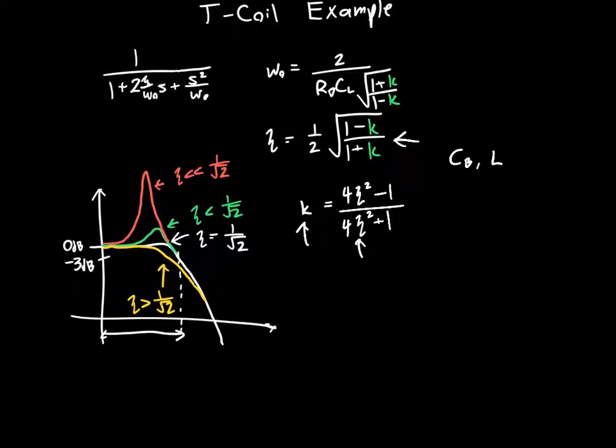So we can actually redraw this equation a little bit to say that zeta is now the variable that we have control over. So we no longer have control over k. We've decided that zeta is the variable that we want to design things in terms of. And then we can rewrite our equations. That's our value for k. And we can find a value for cb. So cb is just cl over 16 times zeta squared. And these are just rearranged versions of the previous equations. And l is just equal to rd squared times cl over 4 times 1 plus 1 over 4 zeta squared.